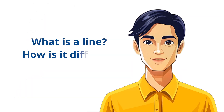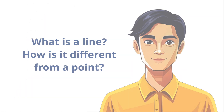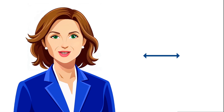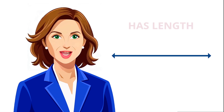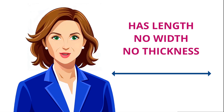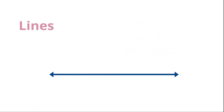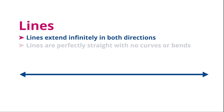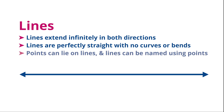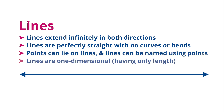And what about a line? How is it different from a point? A line is a straight path that extends infinitely in both directions. Unlike a point, it has length but no endpoints. Lines are perfectly straight with no curves or bends, and are one-dimensional, having only length. Points can lie on lines, and lines can be named using points.